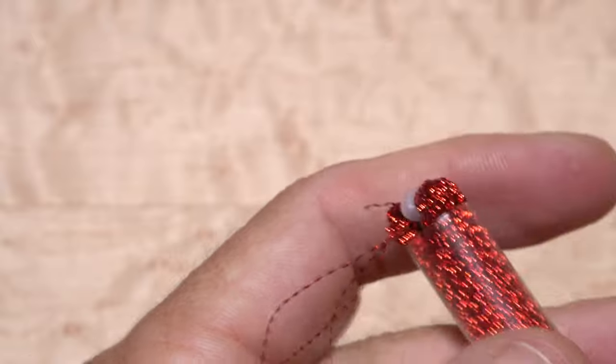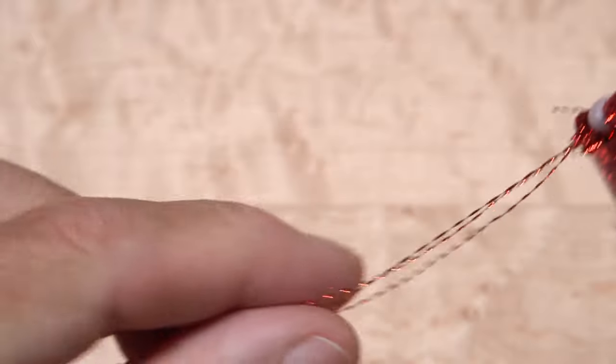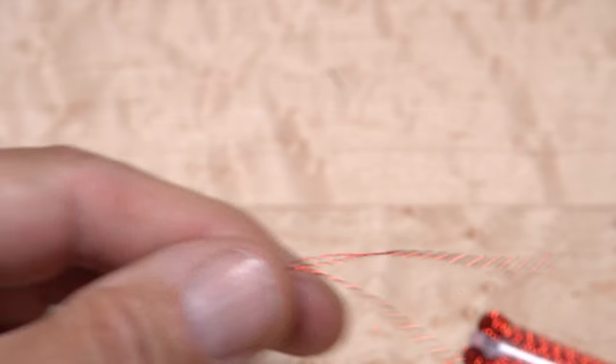Once in the straw, it's very easy to use a bodkin to separate out however many strands you want and then snip them off nice and close.